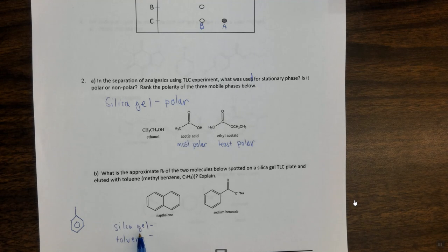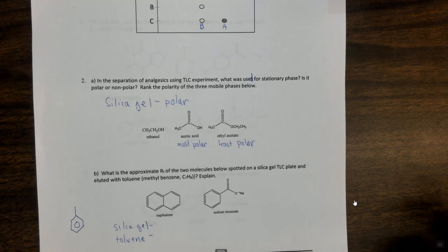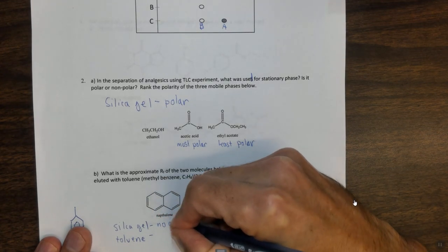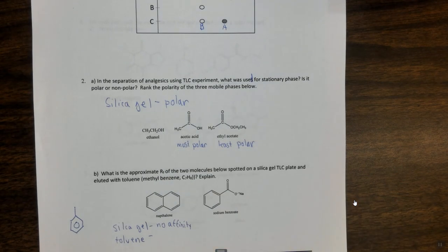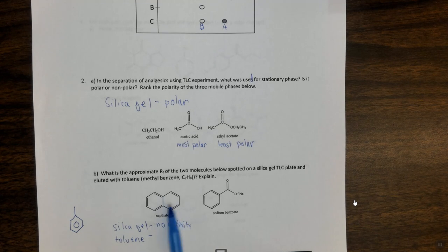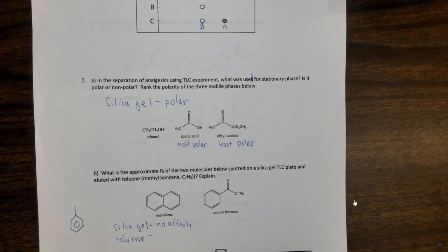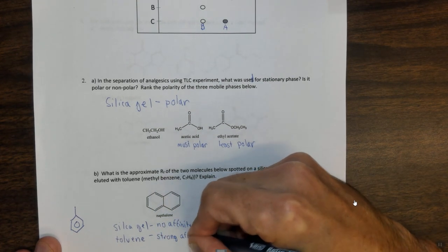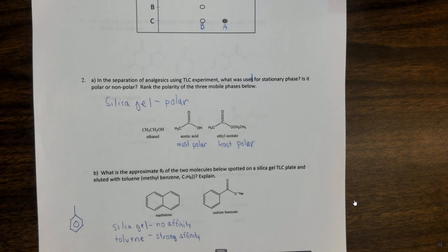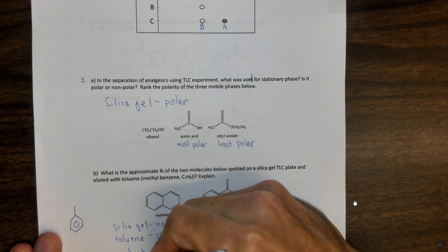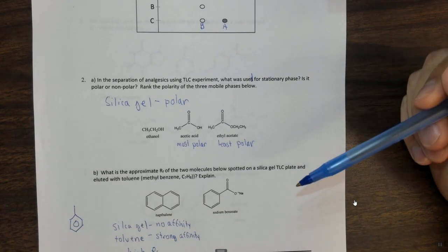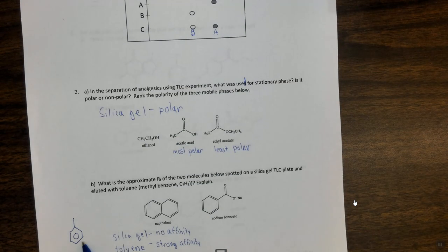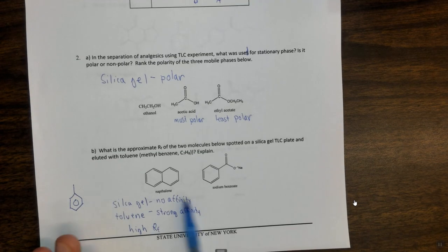Silica gel, as we just said in the previous question, is polar. And naphthalene, which only contains carbon and hydrogen, is relatively non-polar. So it's going to have relatively little or no affinity for the silica gel. What about the toluene? Toluene is methyl benzene. This is an aromatic ring, this is very non-polar. So it has a strong affinity for the toluene. Therefore, we could say this should have a high RF, meaning it should travel pretty far on a TLC plate. It should travel very far because it's going to want to follow the mobile phase toluene because it has a strong affinity for that and no affinity for the silica gel.